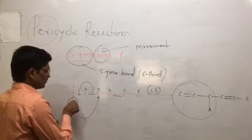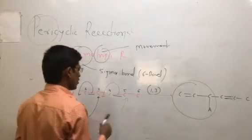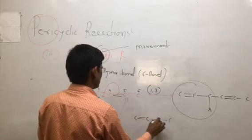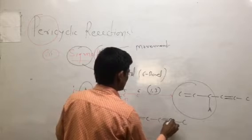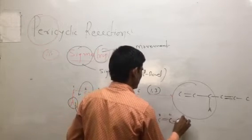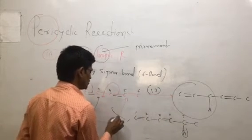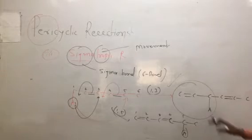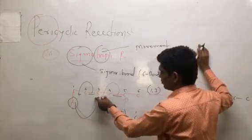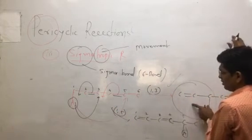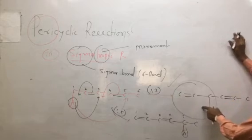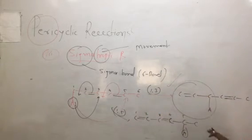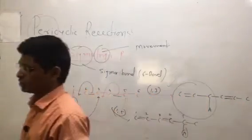Suppose if atom A is shifted from position 1 to position 5, a bond is formed between carbon atom number 5, and atom A comes to that position. So this is called a 1,5-shift. This type of reaction involves 1,3-shifting and 1,5-shifting. We say 1,3-shift because the sigma bond was shifted to the third position, so that product is called the 1,3-shifting product. If the atom shifts from position 1 to position 5, that is called the 1,5-shifting product.